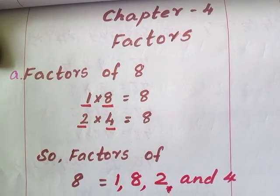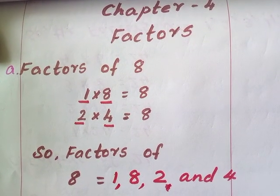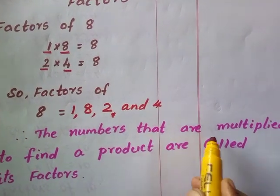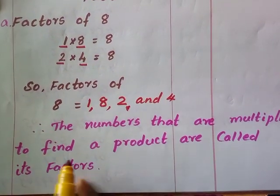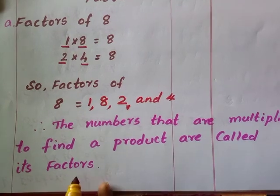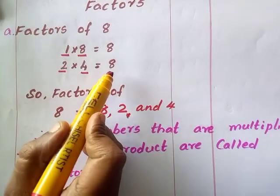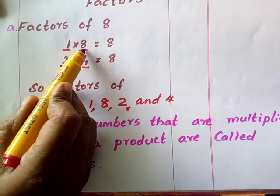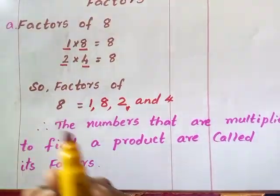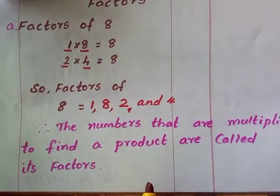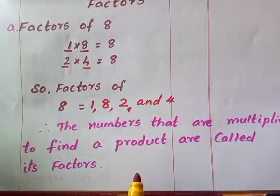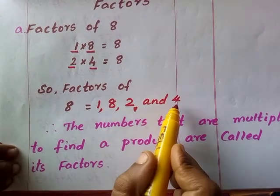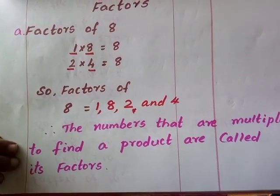So what do we mean by factors? The numbers that are multiplied to find a product are called its factors. That is, here to get 8, these are the numbers we multiplied, so these are called the factors of 8. What are the numbers we multiply to get the product? Those numbers are called factors. So the factors of 8 are 1, 8, 2, and 4. Let us see a few more examples.